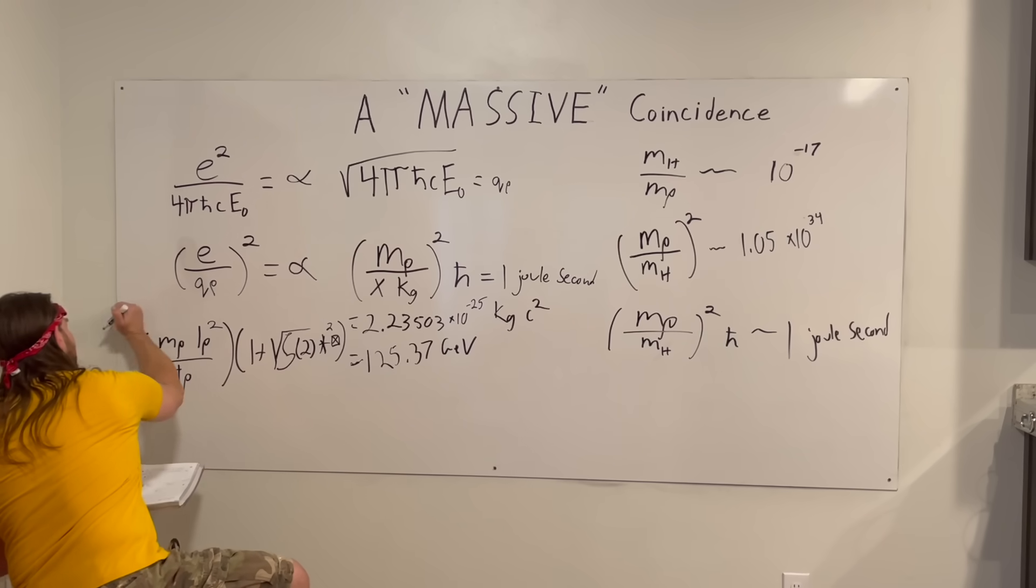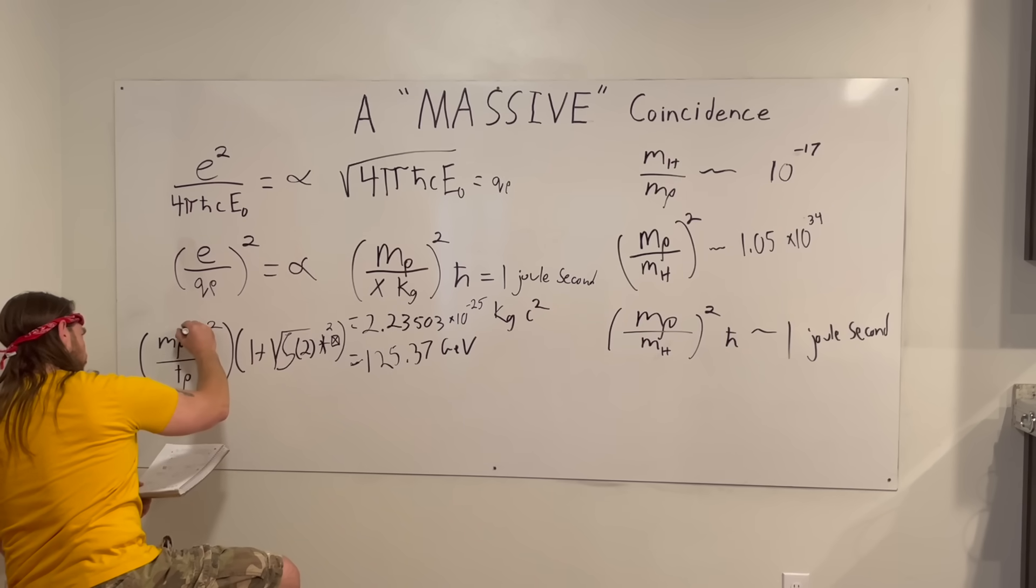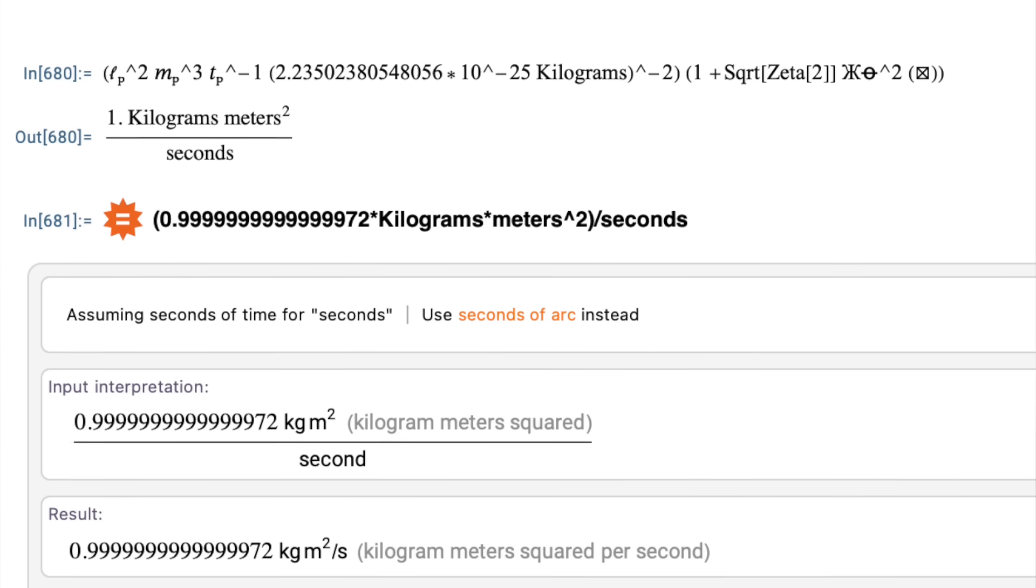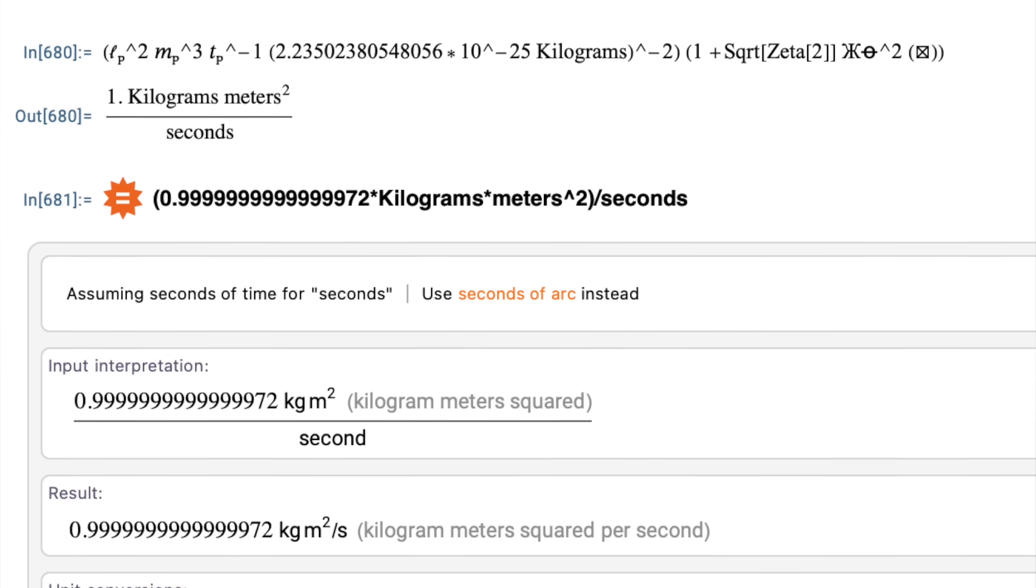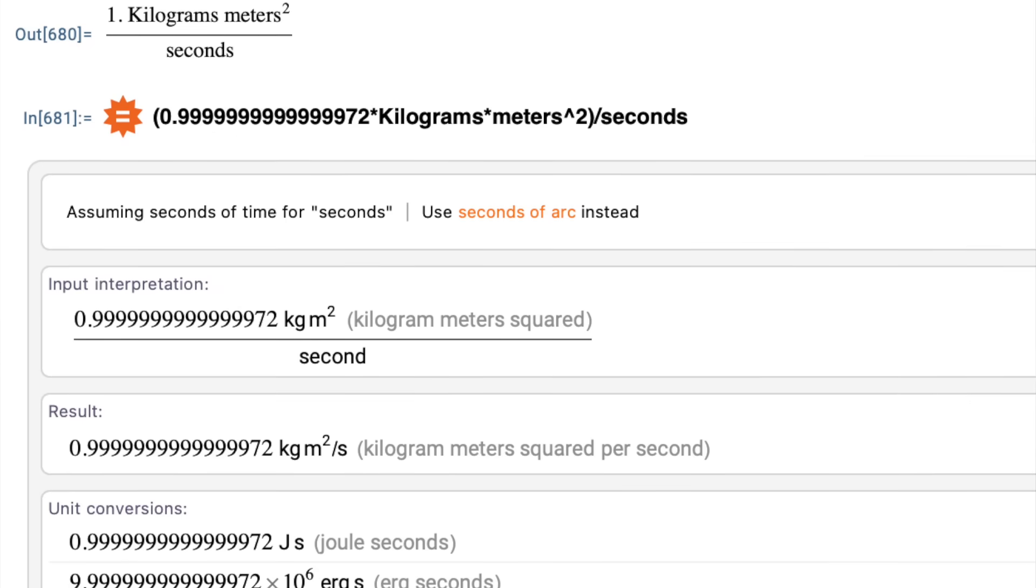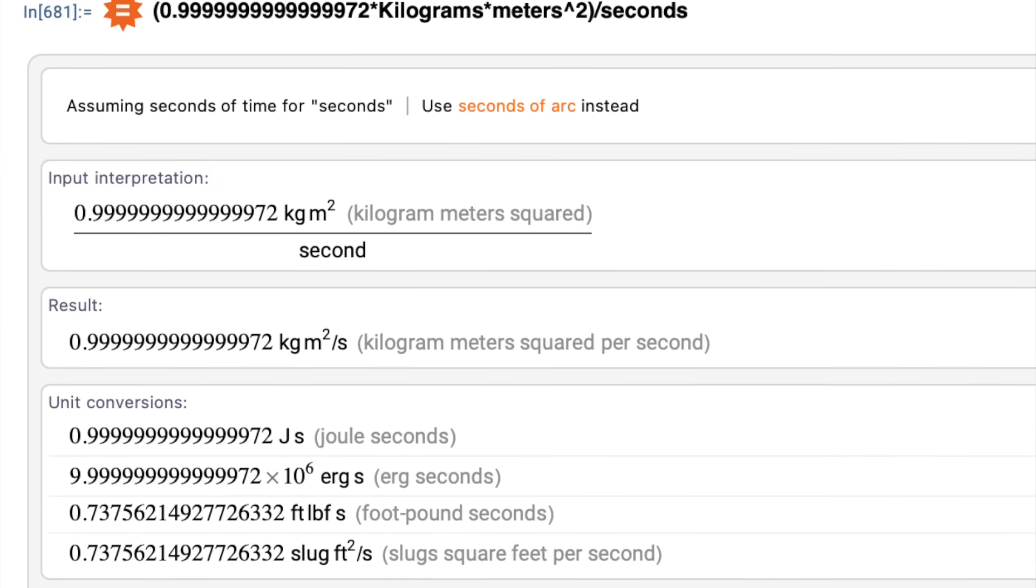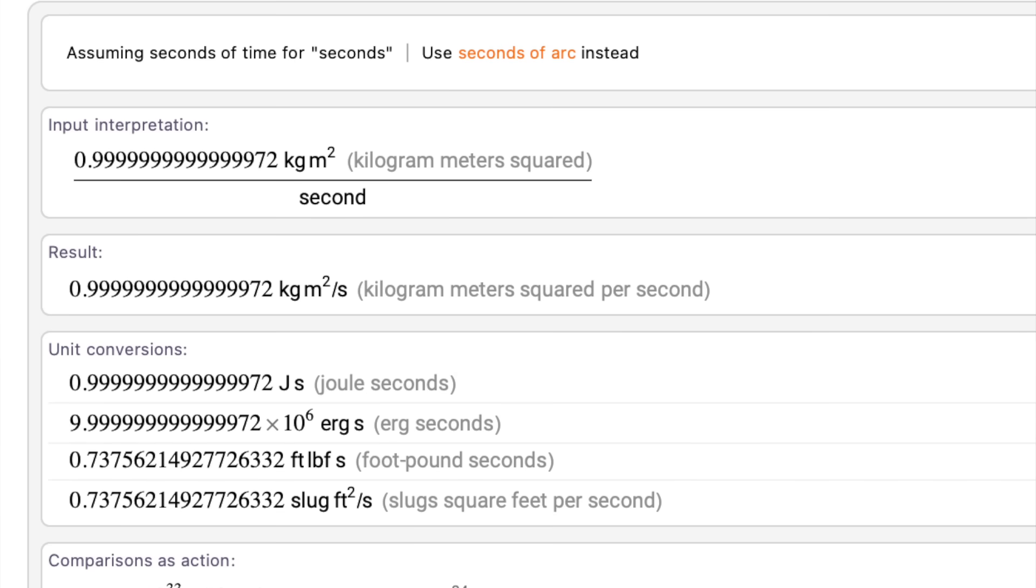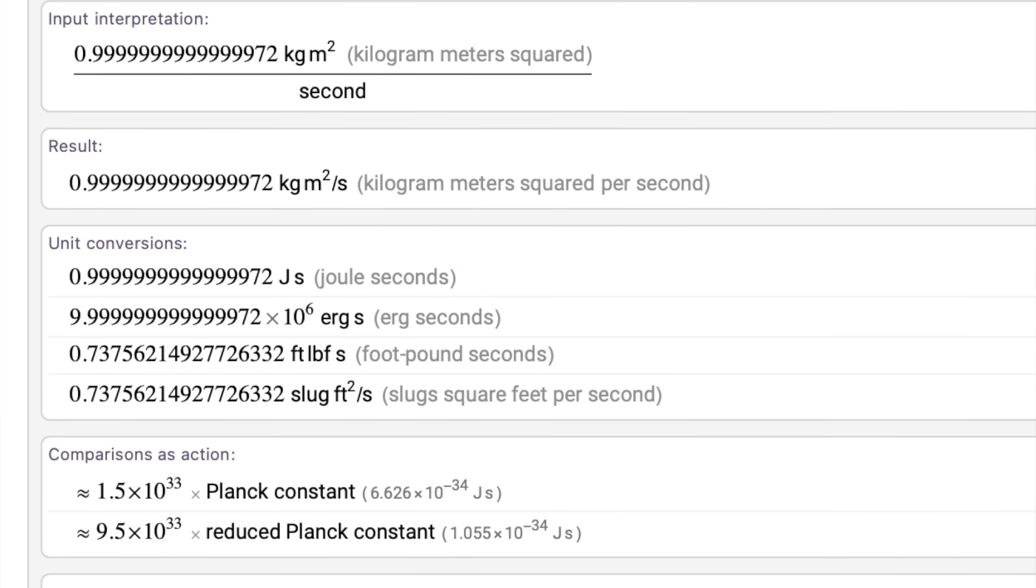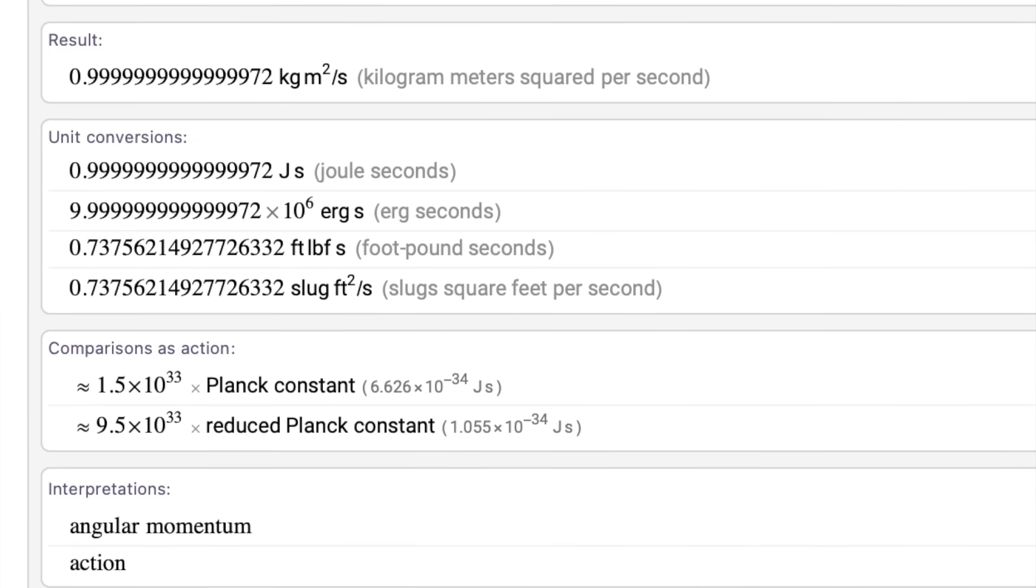We can go from h-bar to, we've got three Planck masses, mass of the Higgs squared, and when we do this, this comes out to be, I'll say approximately because it's 1 joule second to 14 significant digits.